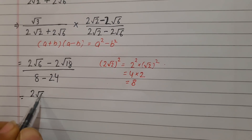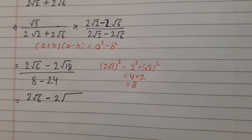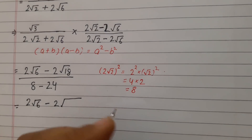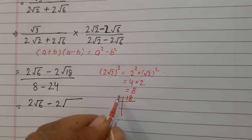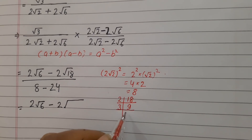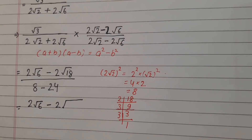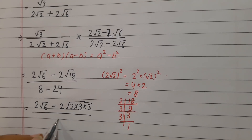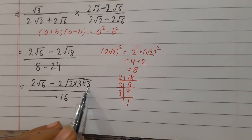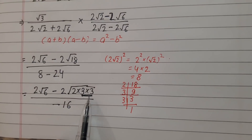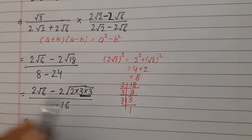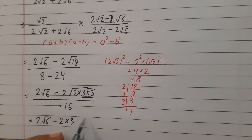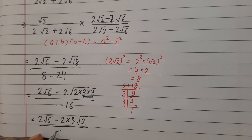In the numerator we get 2 root 6 minus 2 root 18. Now let's see if a number can come out of root 18. We will factor 18: 18 equals 2 times 3 times 3. Since 3 appears as a pair, one 3 comes out of the root. So root 18 becomes 3 root 2. Therefore the numerator becomes 2 root 6 minus 2 times 3 root 2, and the denominator is 8 minus 24 which equals minus 16.